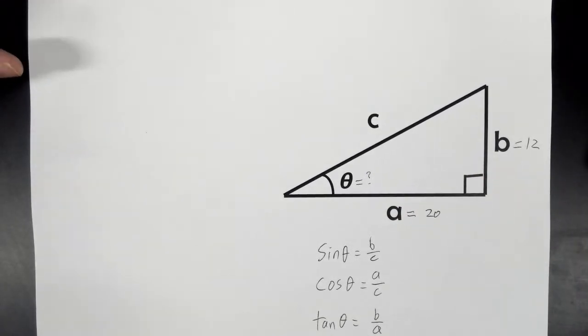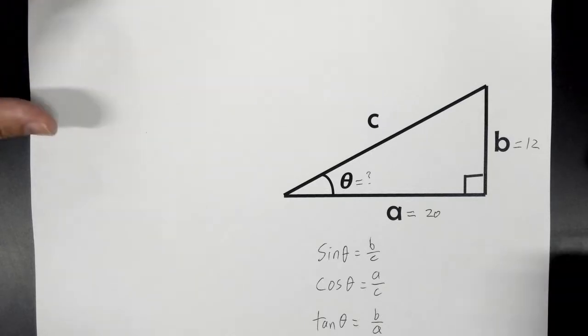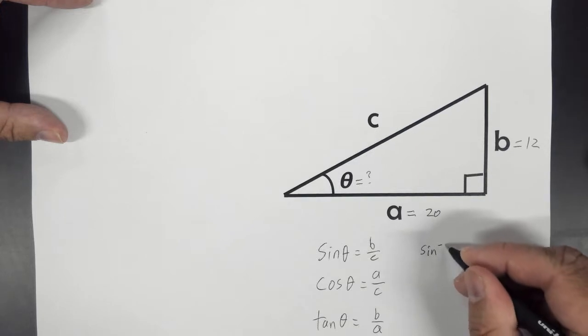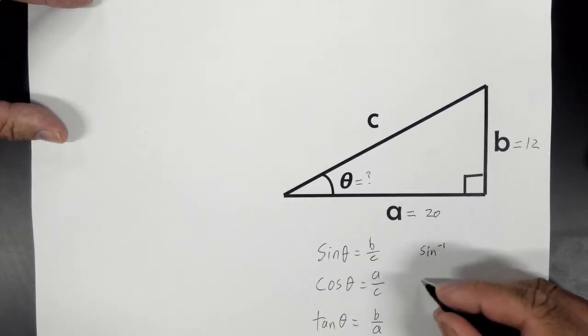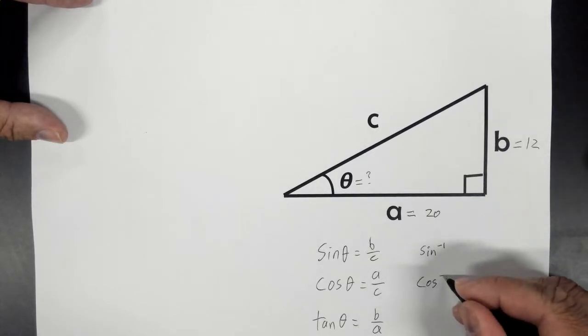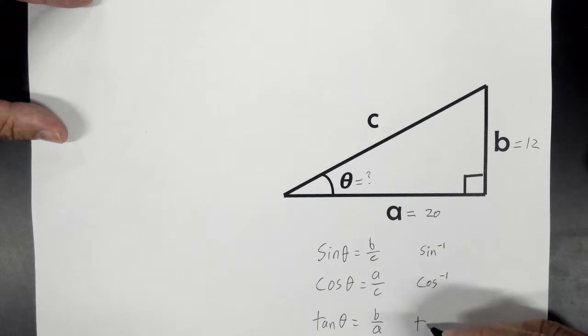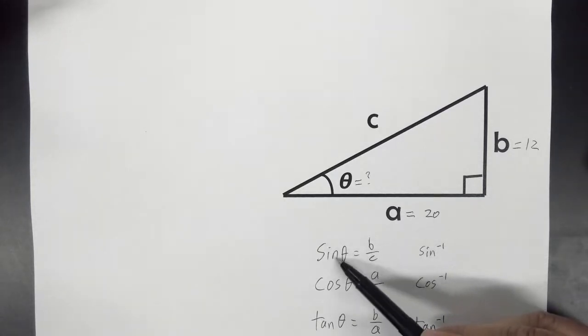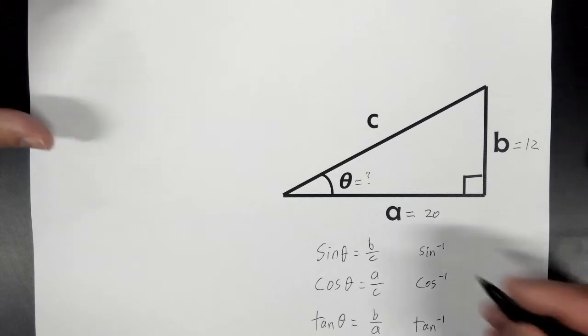To do that, you need inverse functions. So sine has an inverse sine. It looks like that on the calculator. Cosine has an inverse cosine, and tangent has an inverse tangent. It looks like that on the calculator. And basically, what these are is it's the inverse of this function. So what does that mean?